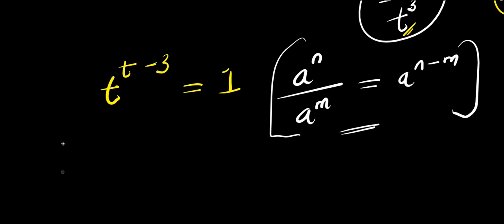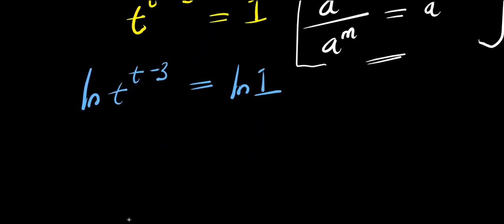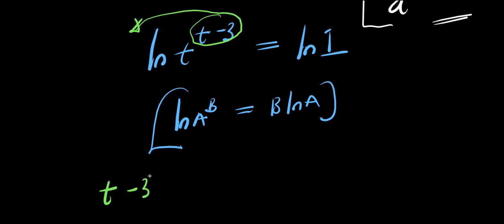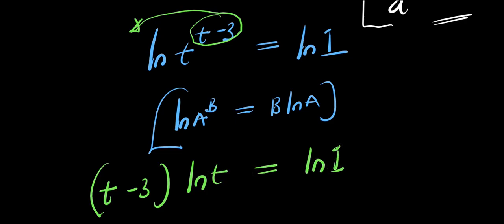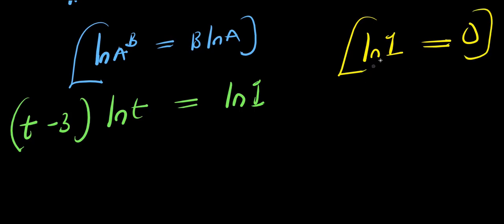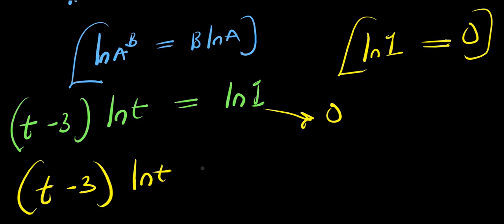We still make use of ln. I have natural log of t to the power of t minus 3 equals natural log of 1. We go back and apply the logarithm property: if you have ln of a to the power b, this equals b times ln of a. So the t minus 3 will come in front of the ln, giving us t minus 3 times ln t equals ln 1. It is worthy to note that ln 1 — natural log of 1 — equals 0. So that means you are having t minus 3 times ln t equals 0.